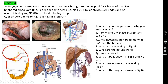Case number one: a 65-year-old chronic alcoholic male was brought to hospital with 3 bouts of massive bright red blood vomiting and dizziness. There is no history of similar previous episodes and he was not taking any NSAIDs or blood thinning drugs. Whenever dealing with any bleeding — upper GI, lower GI, or hematuria — you must ask whether the patient is taking anti-platelets, aspirin, oral anticoagulants, or heparin.